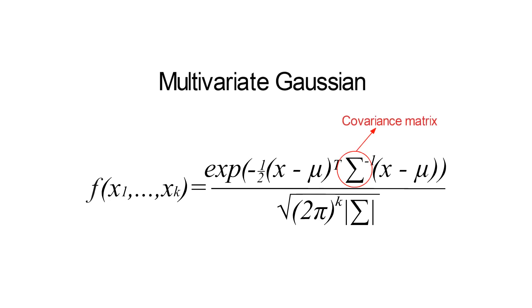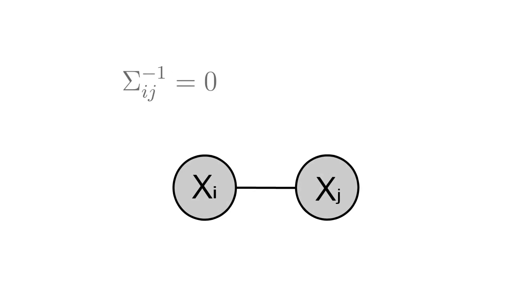In particular, if in the inverse of the covariance matrix known as the precision matrix, an entry is zero, then the corresponding variables are conditionally independent given the rest of the variables.